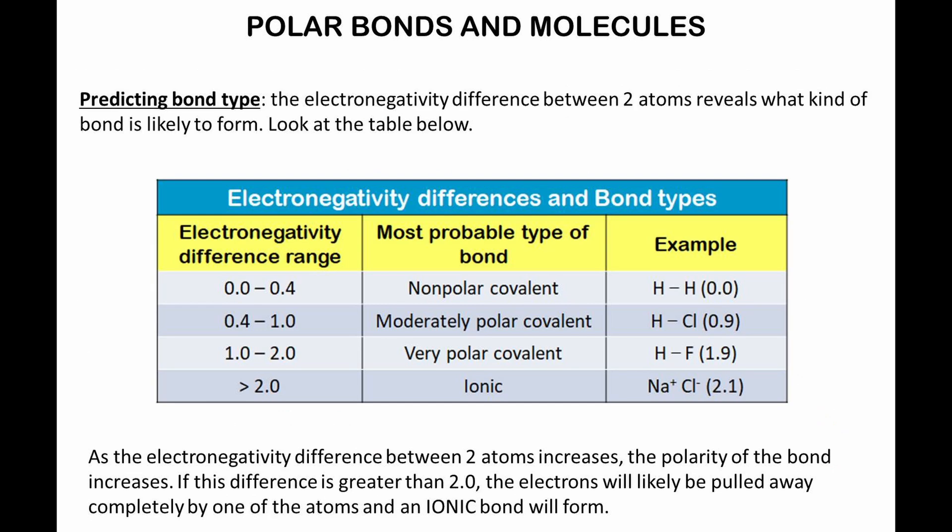The electronegativity difference between two atoms reveals what kind of bond is likely to form. Look at the table below. A nonpolar covalent bond will probably occur if the difference in electronegativity is 0, or let's say less than 0.4. Polar covalent bonds occur if the difference in electronegativity is between 0.4 and 2. If the difference in electronegativity is greater than 2, an ionic bond will form.